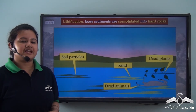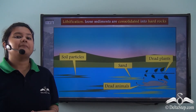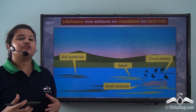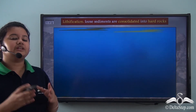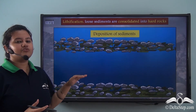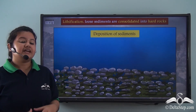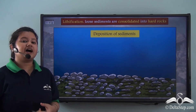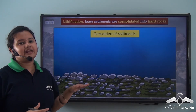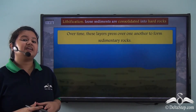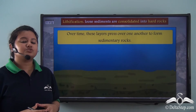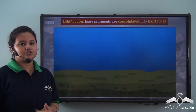Sometimes a plant or an animal may die and get mixed up with other sediments and rock particles. Eventually, these sediments are deposited layer over layer at the riverbed. These deposited sediments are pressed and compressed by the overlying layers of sediments and they eventually get hardened into rocks, leading to the formation of sedimentary rocks.